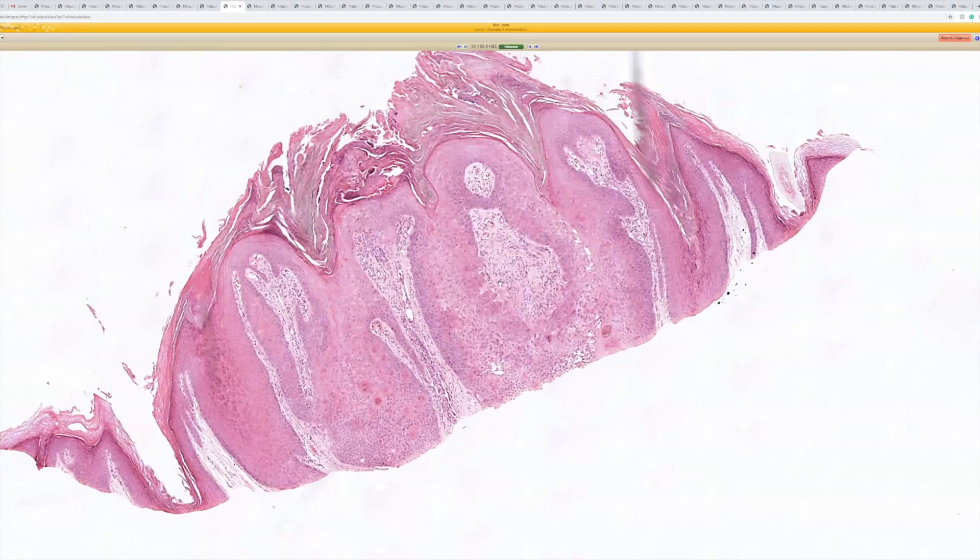Sometimes they're ulcerated on the top and have a lot of stromal edema and inflammation in the dermis. They're often transected because they push down. So when they get shaved off by the dermatologist thinking they're going to maybe be a squamous cell or something like that, you often don't see the base.